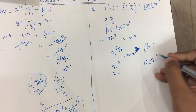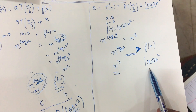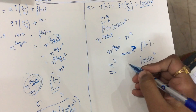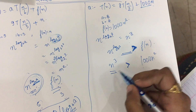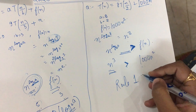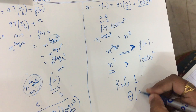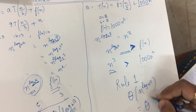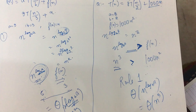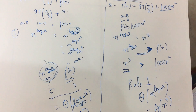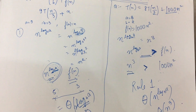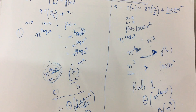You don't have to consider the constant 1000 — just check the n terms. Obviously n³ is greater than n², so n^(log_b a) is greater than f(n). That means I need to subtract something from n³ to reach n², so I use Rule Number 1. By Rule Number 1, the complexity is equal to θ(n^(log_b a)) = θ(n³). Thank you for watching. If you have any doubts, please mention them in the comment section. Do like and subscribe for more videos!